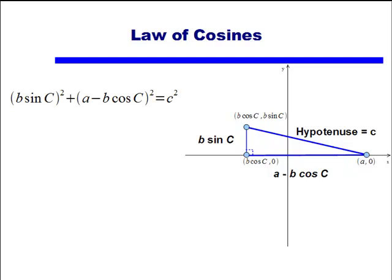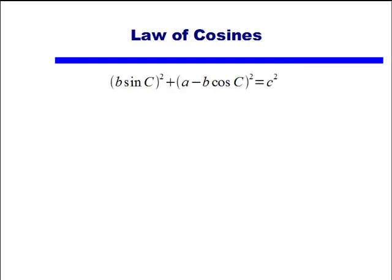Let's see, length of leg 1 squared would be b sine c all squared. The length of the second side is a minus b cosine c, and we'll square all that, and that equals the hypotenuse squared, which is c squared. Well let's actually get rid of the picture all together, and we'll just focus on the algebra here. I have b sine c all squared, plus a minus b cosine c all squared, and that equals c squared.